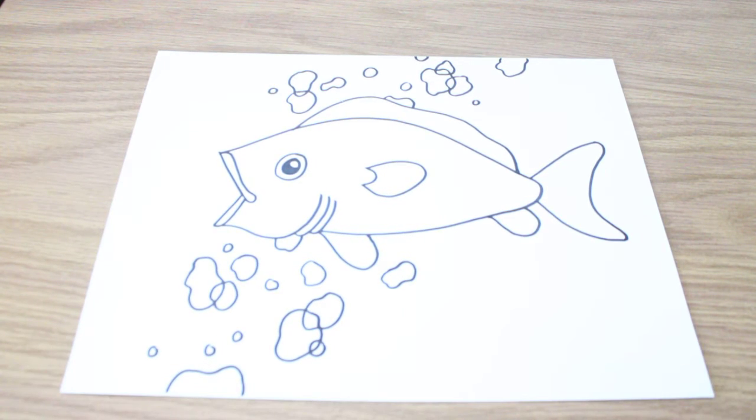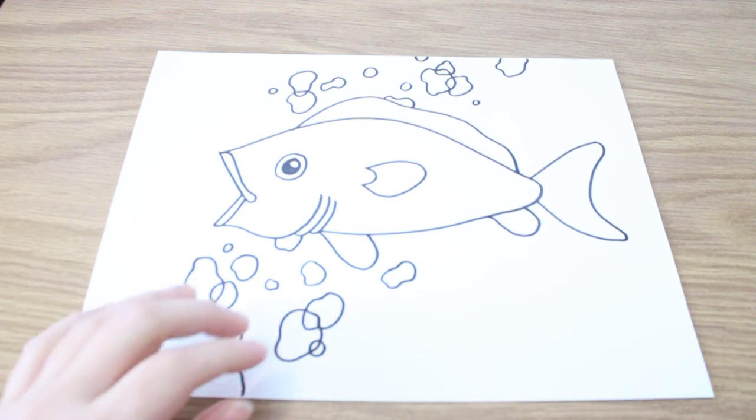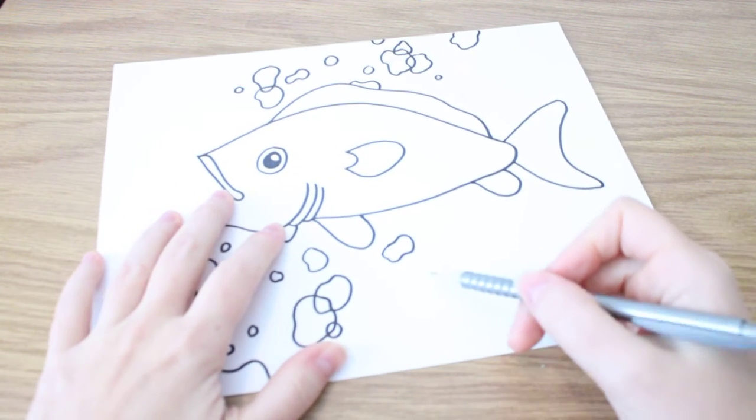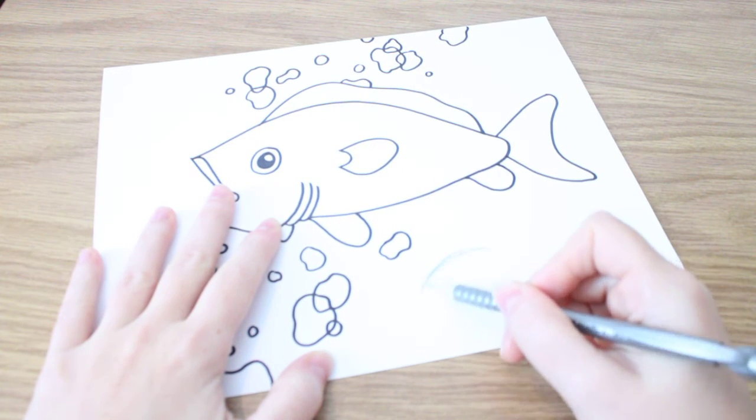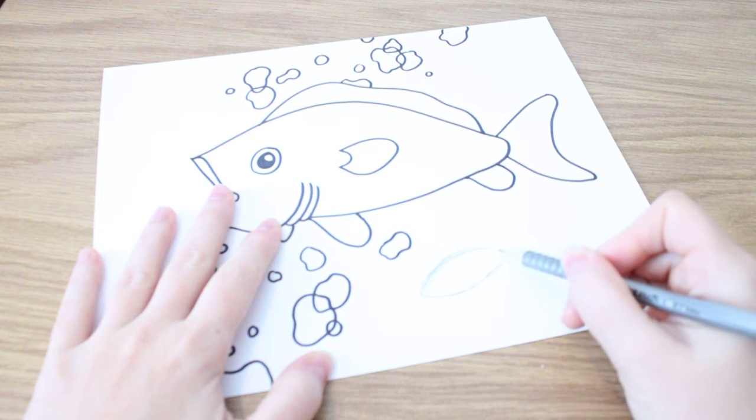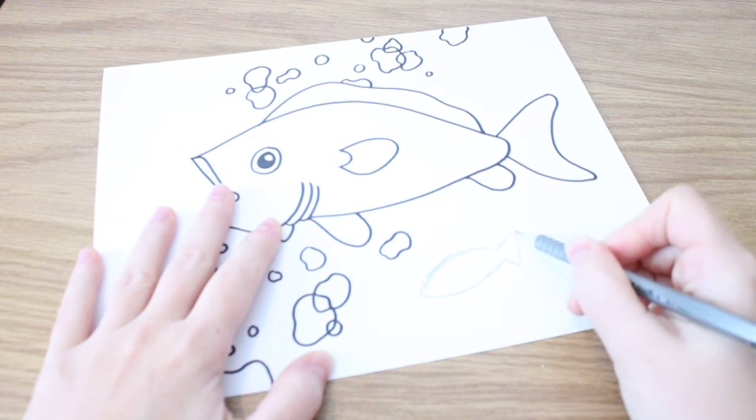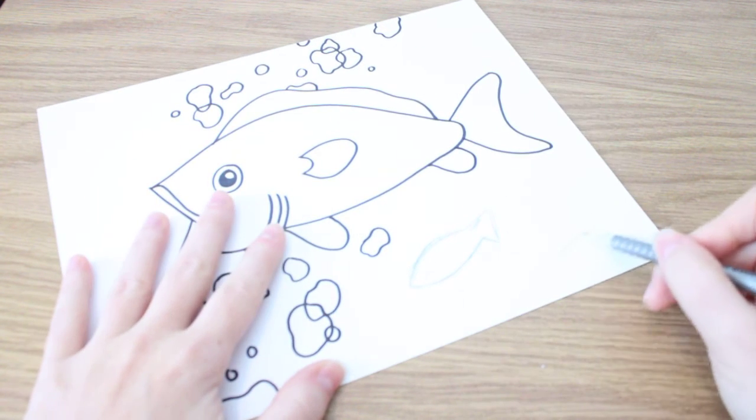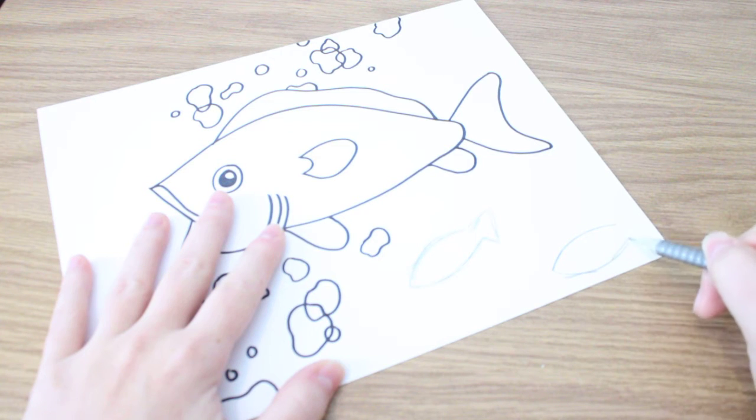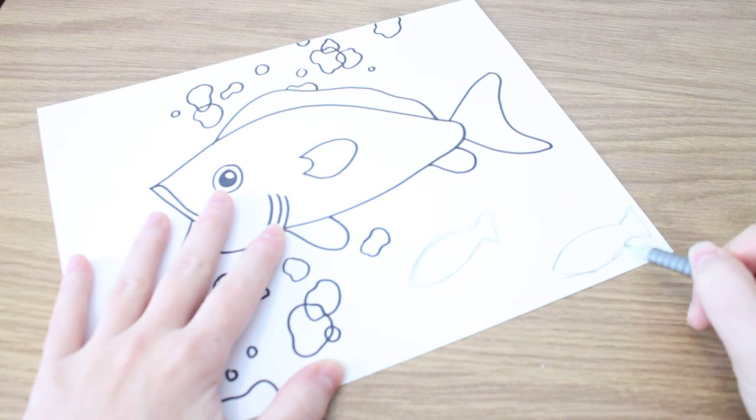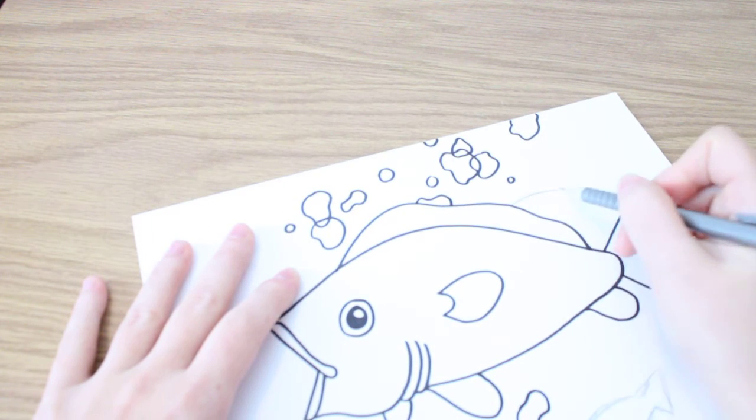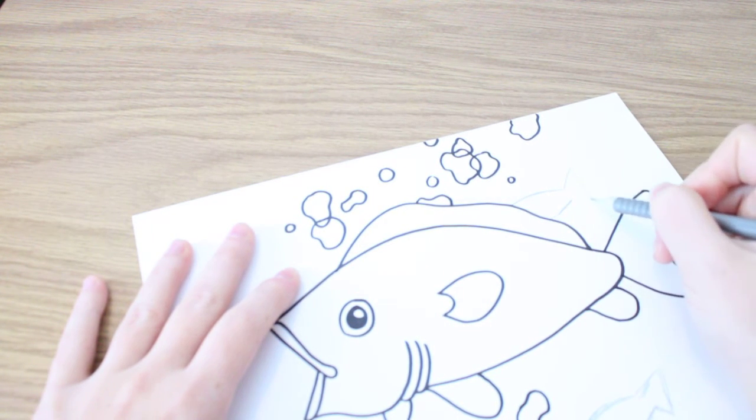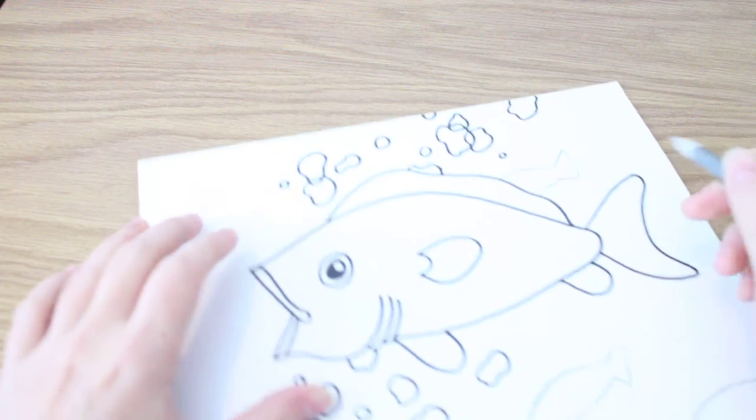When I go and color this, I'm going to put some fish in the background too that are like just colored in. So I'll show you with the pencil, there can be some kind of little shadowy, just silhouette fish. These are just going to be colored in and they won't have that dark outline because this guy's going to stand out, he's the main fish.